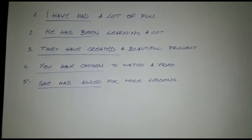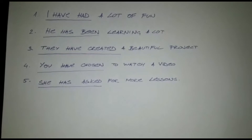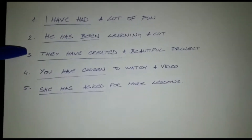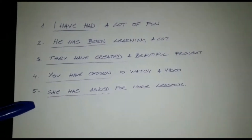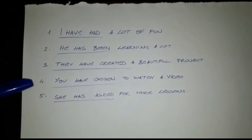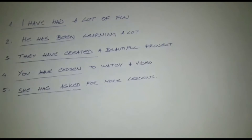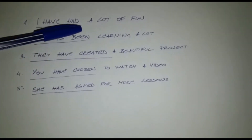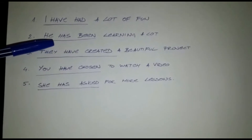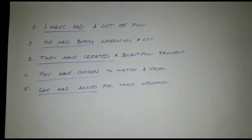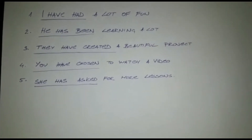Now remember, we said that past participle often times ends in -ed. You can actually see it here and here. But here, here and here you don't see it ending in -ed. In the first example, have is the helper word for had, and in the second one, has is the helper word for been. So it's very important to know when you can use it.